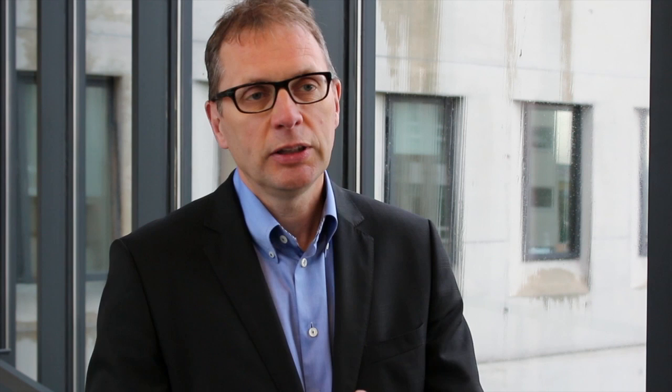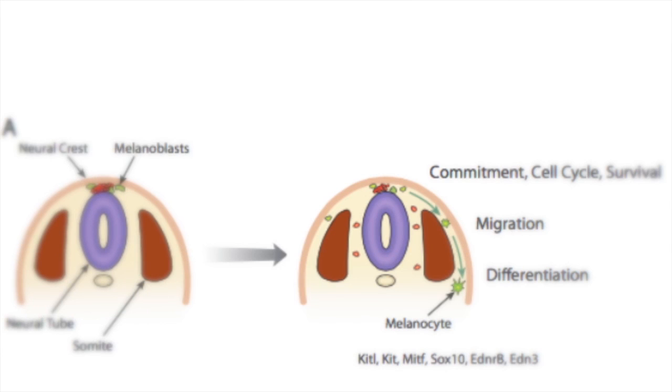What's so interesting about these cells is, first of all, they have to arise from their place of origin and then migrate to their positions in the body. For example, they need to migrate all the way to the belly region in the skin, they need to migrate to the eye, to the inner ear, and to the hair follicles all over the body.